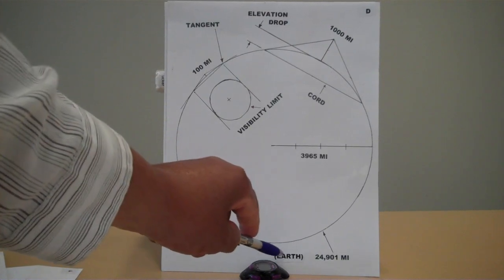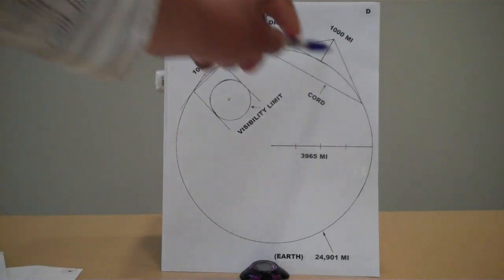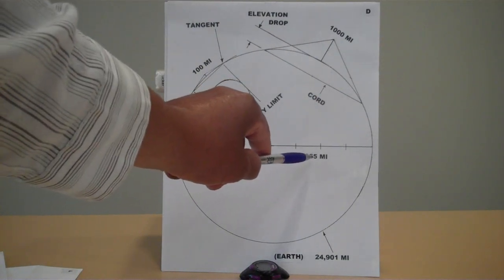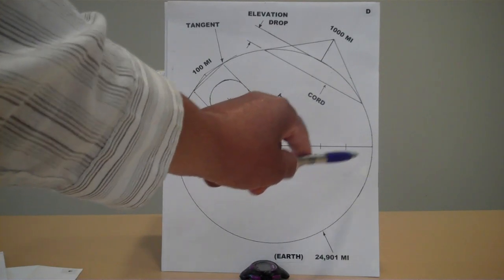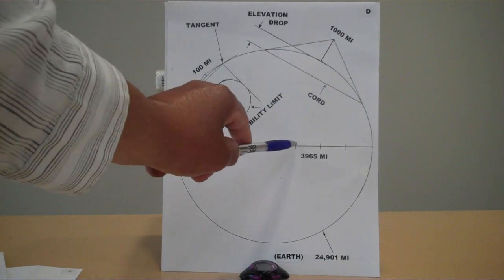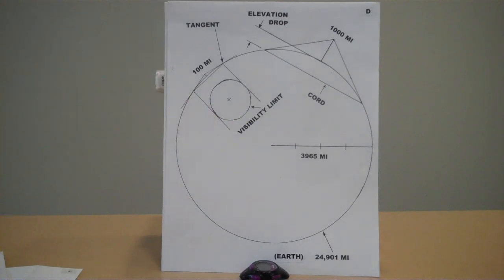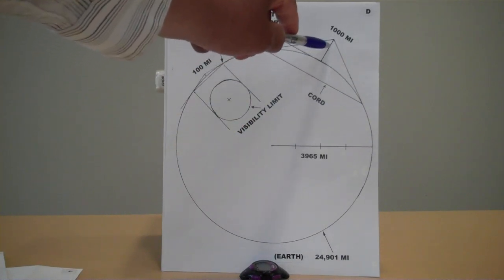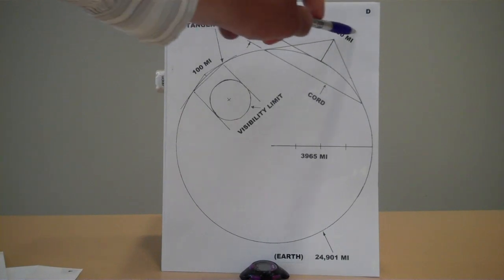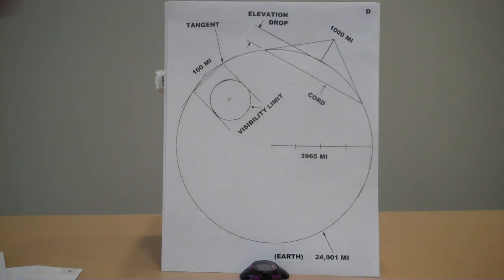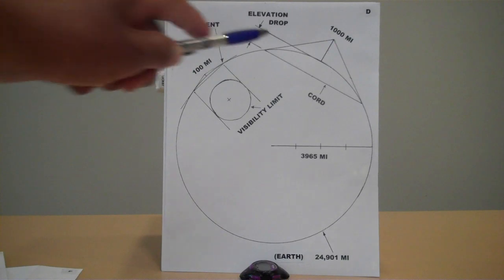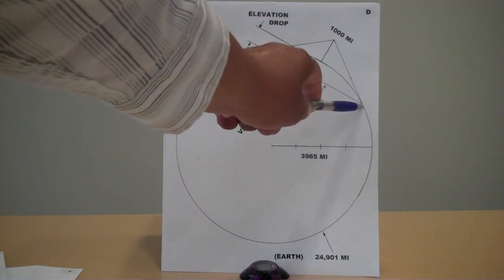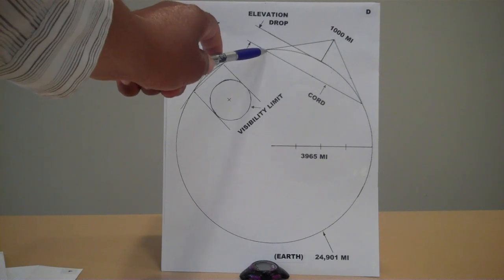This is illustration D. The Earth is considered to be 24,901 miles in circumference. The radius line is 3,965 miles — roughly 4,000 rounded off — divided into 1,000-mile sections. When we take 1,000 miles here and put it up here, it becomes your ship 1,000 miles above the surface. These are the tangent lines touching the surface of the Earth — the angled lines here are the tangents.